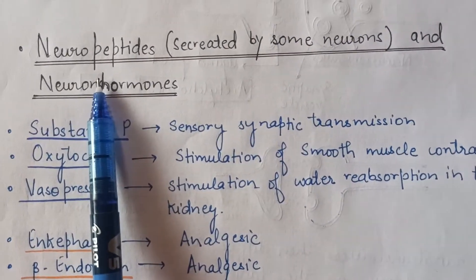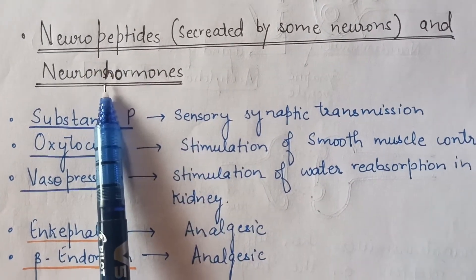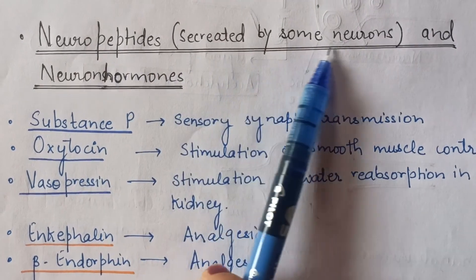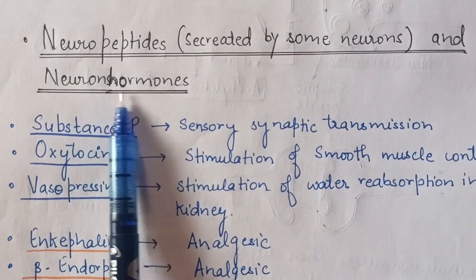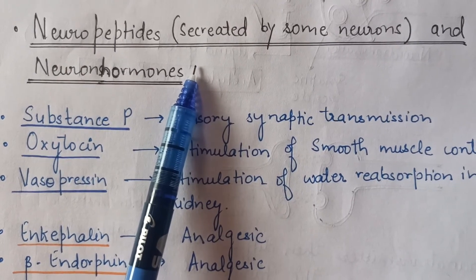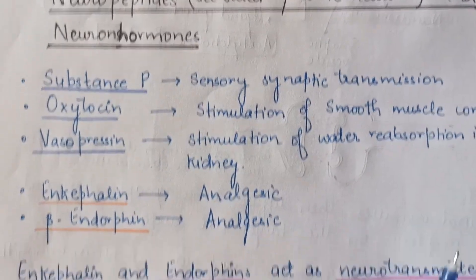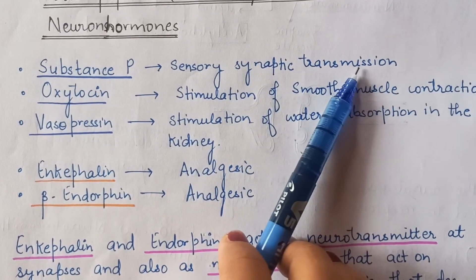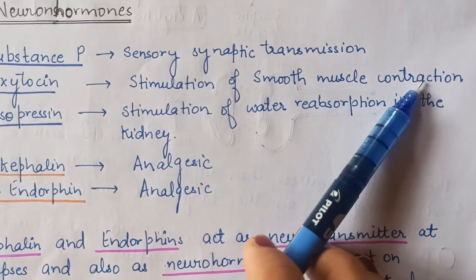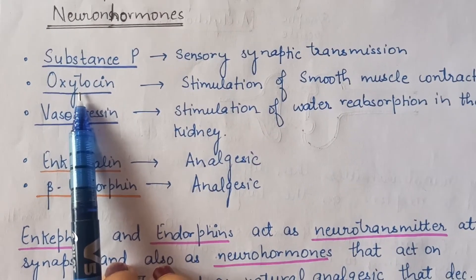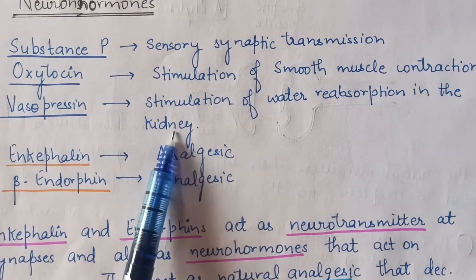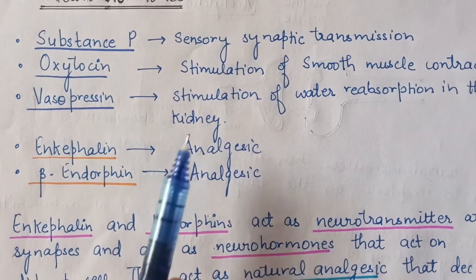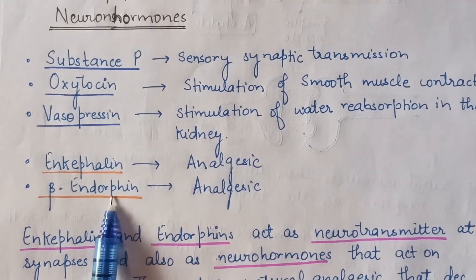The next category is neuropeptides or neurohormones, which are different from neurotransmitters. Neuropeptides are signaling molecules secreted by neurons but they are not neurotransmitters — they are considered neurohormones. Examples include substance P, which induces sensory synaptic transmission; oxytocin, which stimulates smooth muscle contraction during birth; vasopressin, which stimulates water reabsorption in the kidney; and enkephalin and beta-endorphin, which both function as analgesic pain relievers.